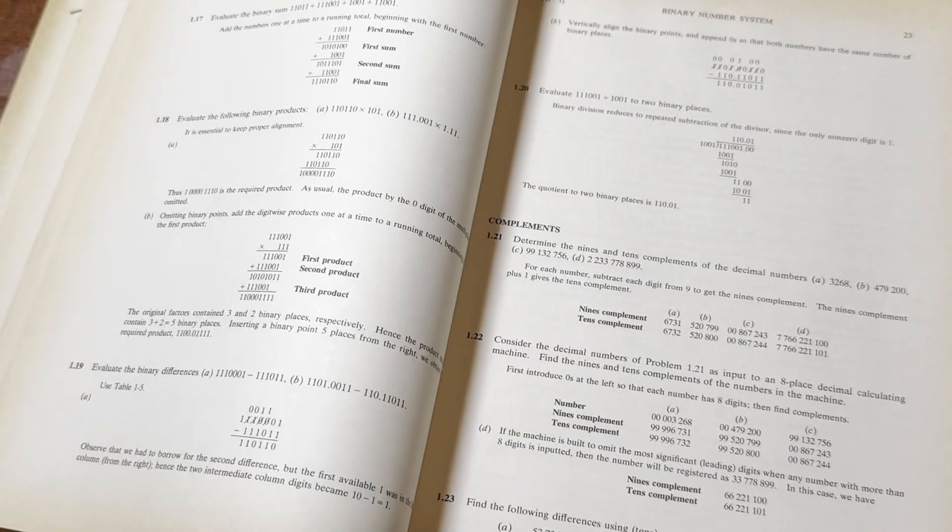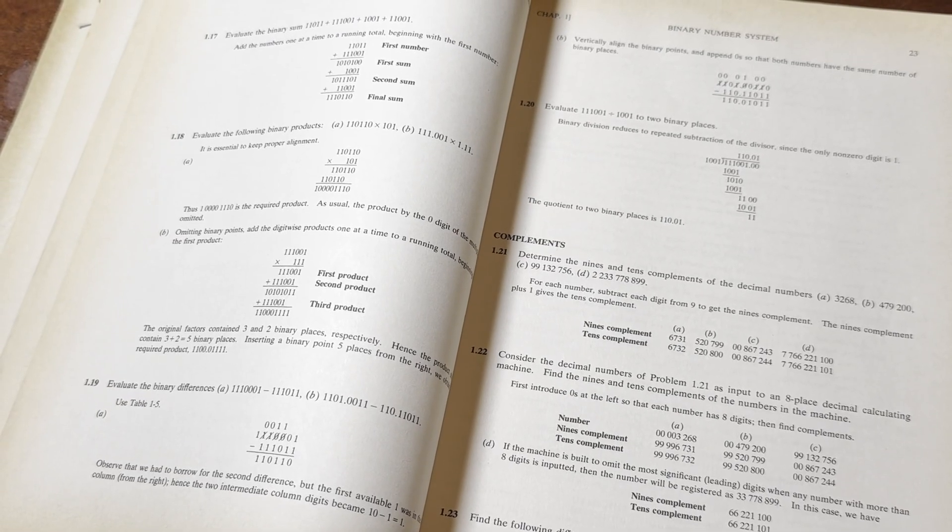This one does have a lot of topics that overlap with other Schaum's. Like the one for finite math and like the one for set theory, they're kind of like, they have similar topics. I have one for combinatorics that has combinatorics in it.